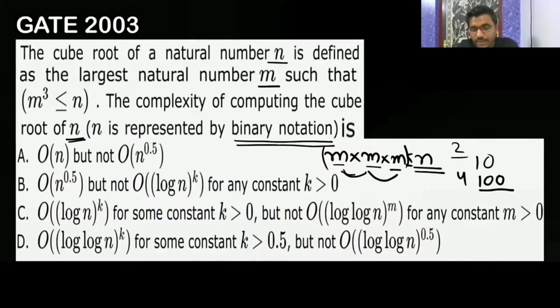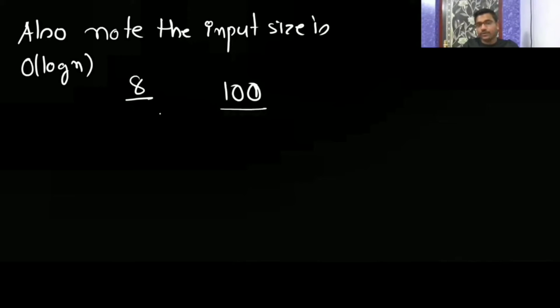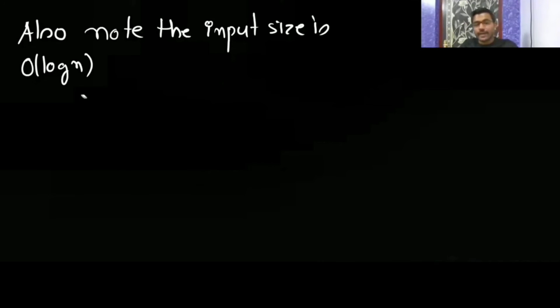Also note that n is represented using binary notation. When we denote any number using binary notation, we require log n bits. The input size is O(log n). For example, to represent 8 you need 4 bits (1000), so you require log of 8. Any number requires log of that many bits. So the size is going to be log of n because n is given in binary notation.